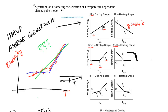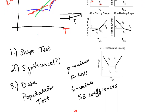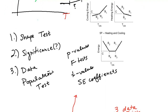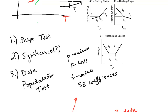In the last video, we were discussing why this algorithm is useful when you want to remove user input from the determination of which temperature-dependent change point model shape to use when doing an MNV project. We discussed the three tests we're going to use for this: a shape test, a significance test, and a data population test. In this video, we're going to go over what I meant by the shape test.